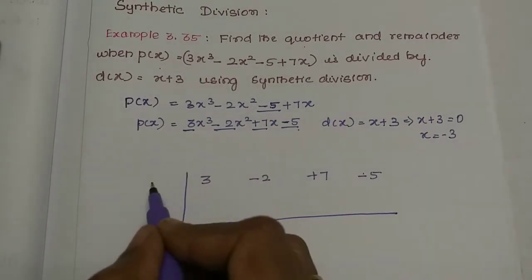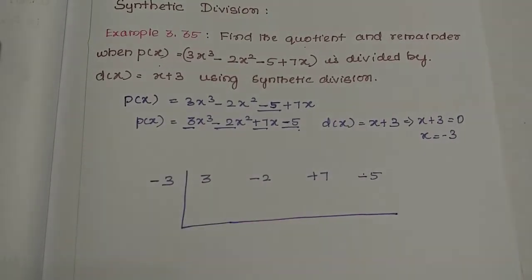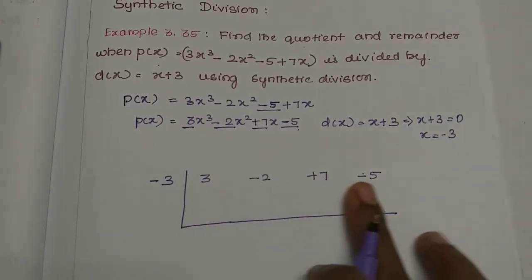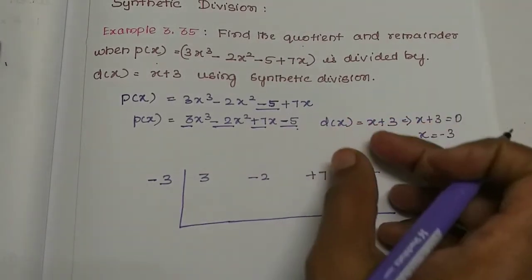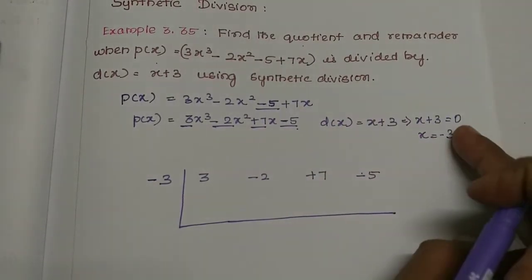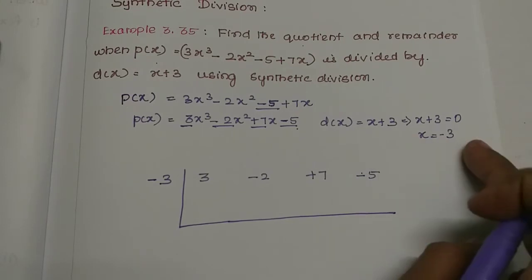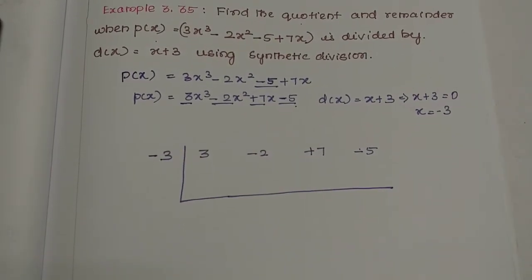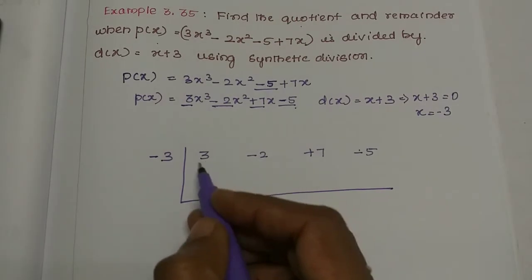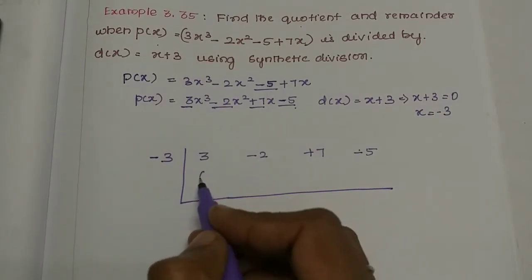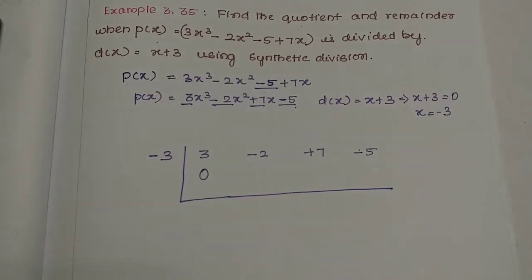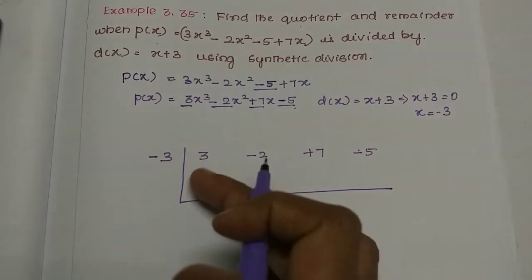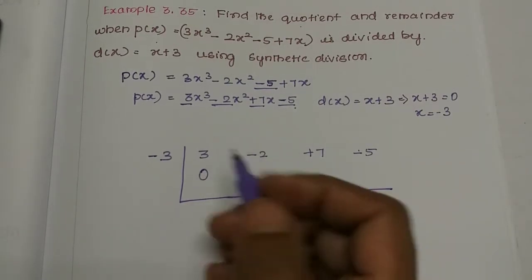So the steps are: arrange the standard form, take the coefficients, set the divisor d(x) equal to zero and find the x value — that gives us -3. We bring down the first coefficient, which is 3, as the starting point.